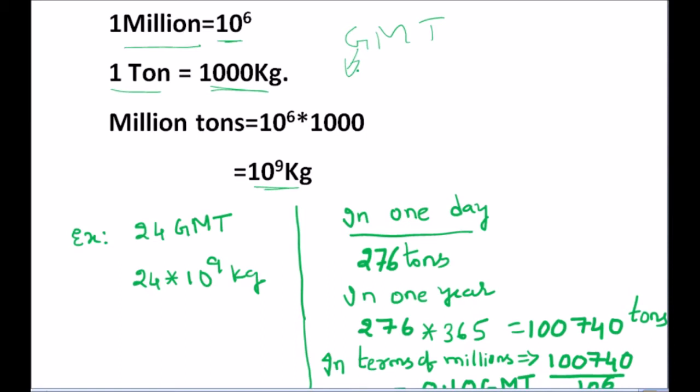Now let us understand further with a small example. If I say 24 GMT, it means 24 into 10^9 kg. This is the total load that was coming over the track — 24 into 10^9 kg.